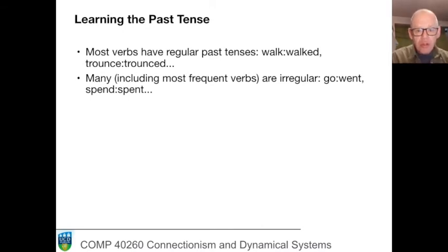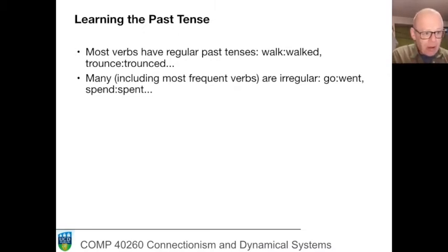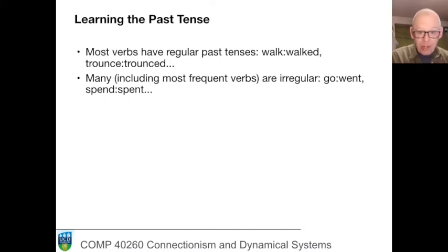Those verbs which are used most frequently — to have, to get, to go, to be — are frequently, if not inevitably, irregular. So in English we have 'go' with a past tense 'went' instead of 'go'd'. 'Spend' has a past tense 'spent' instead of 'spended', and so on. And there's little systematicity here.